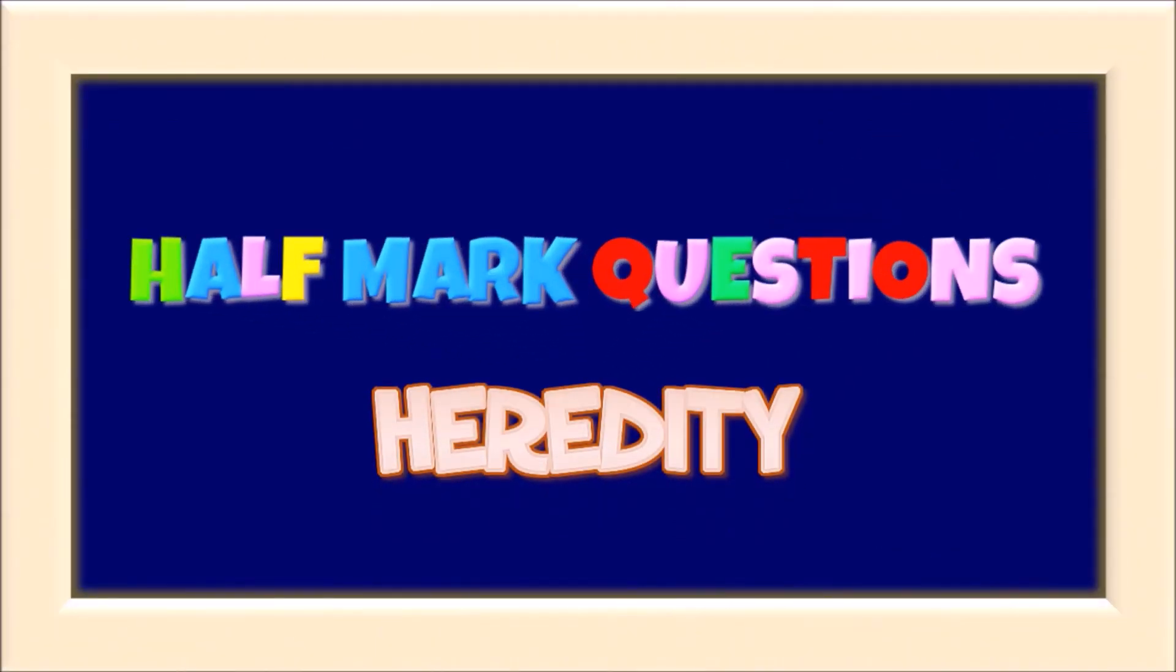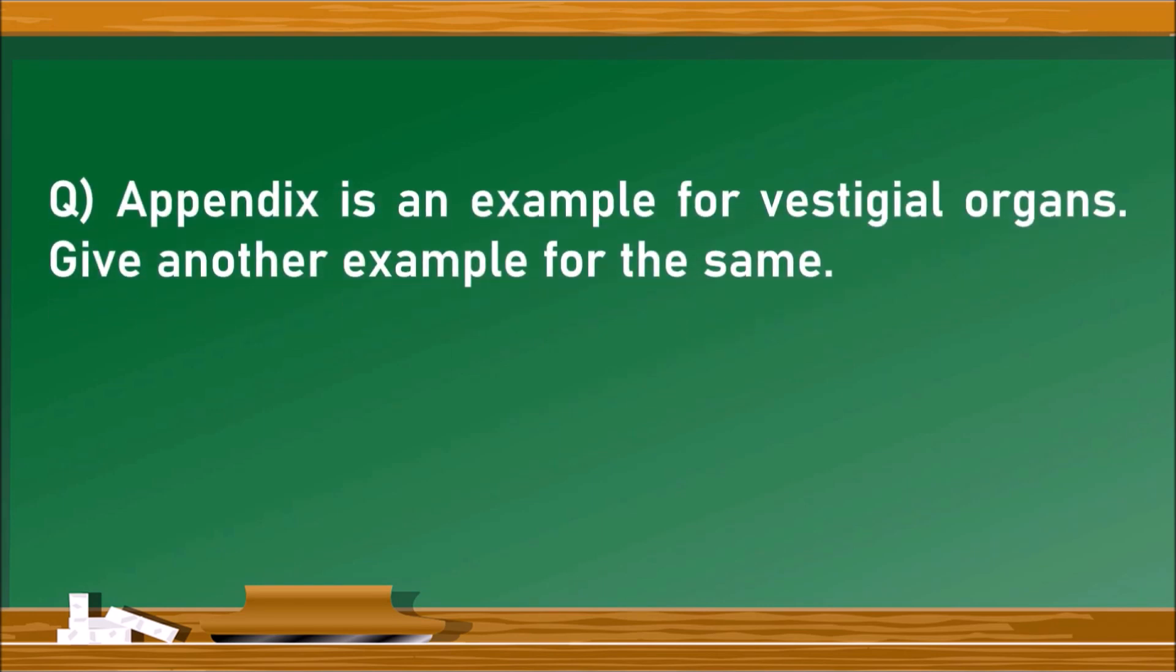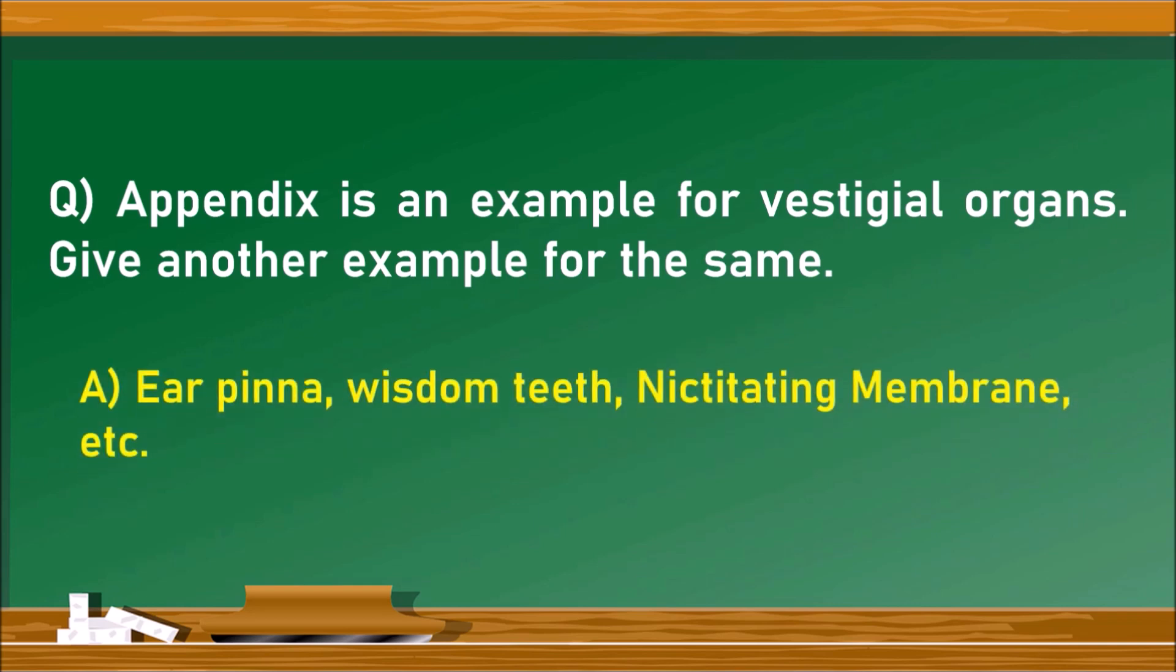The first question: Appendix is an example of a vestigial organ. Give another example for the same. Vestigial organs are organs which do not have any function in our body but still exist. Examples include ear pinna, wisdom teeth, and nictitating membrane.